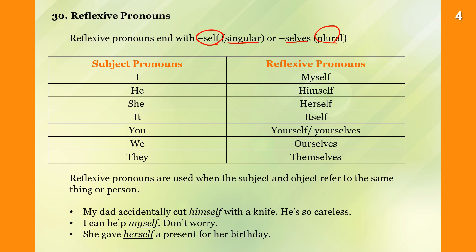Subject pronouns and their reflexive forms: I — myself. He — himself. She — herself. It — itself. You singular — yourself. We — ourselves. They — themselves.